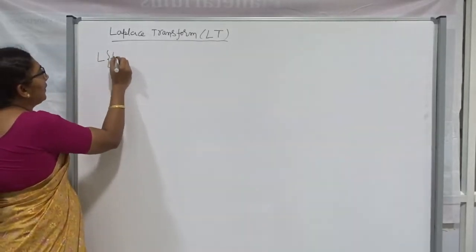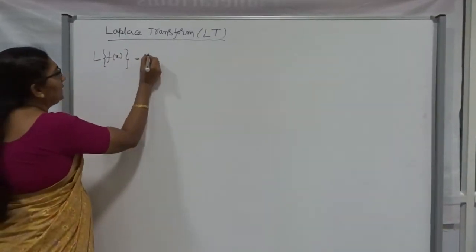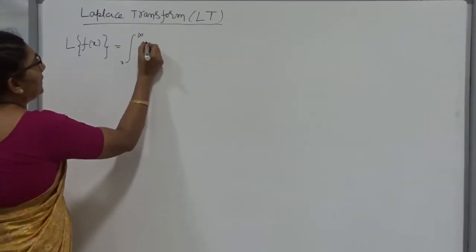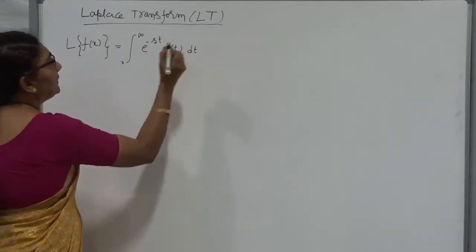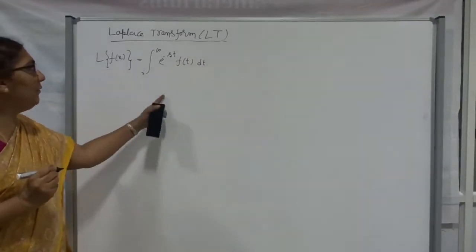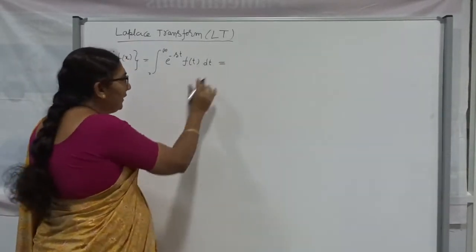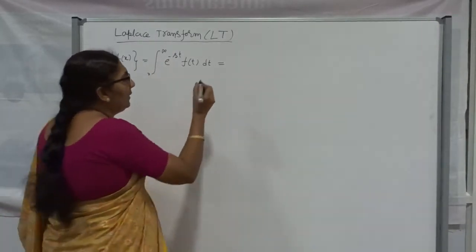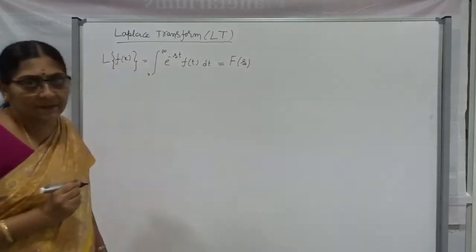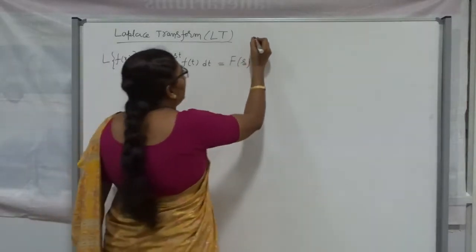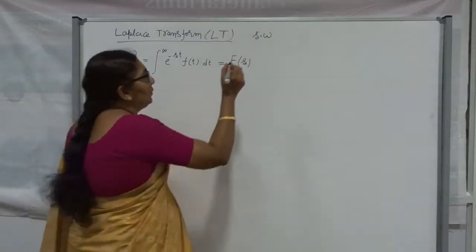Laplace Transform for the function f(t) is denoted by L{f(t)}, defined as the integral from 0 to infinity of e^(−st) into f(t) with respect to t, where s is the parameter of the transform. Once you evaluate this integral based on f(t), we get a result in terms of the parameter, denoted as F(s). In some textbooks they use omega or alpha — all of these are the same.